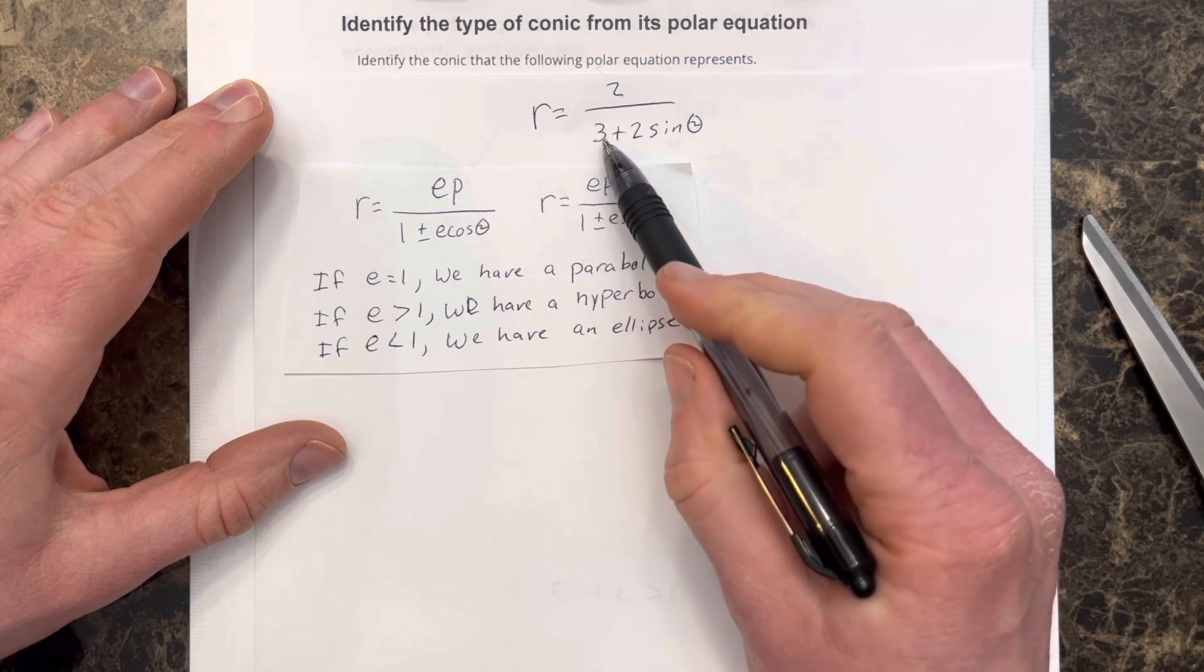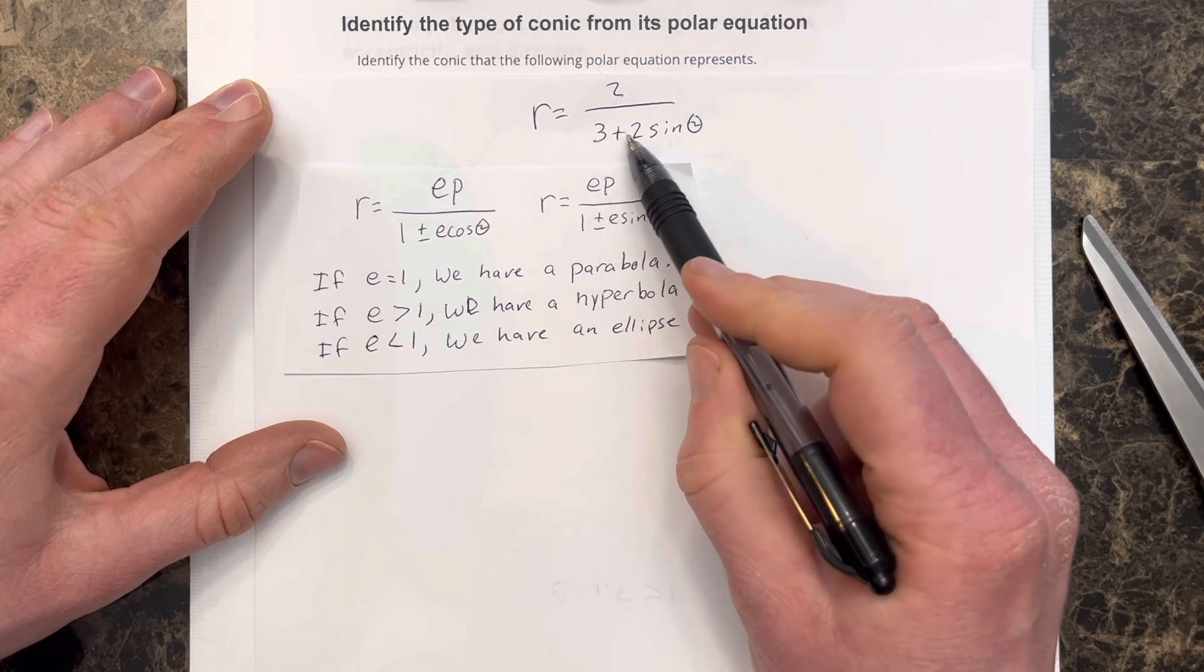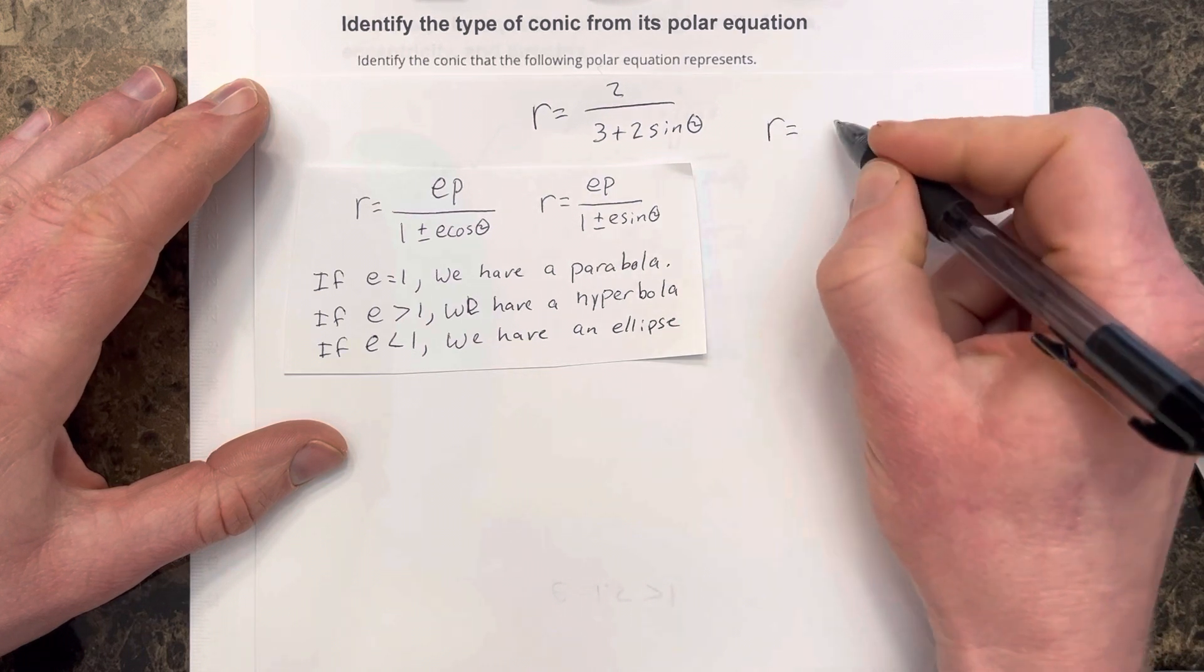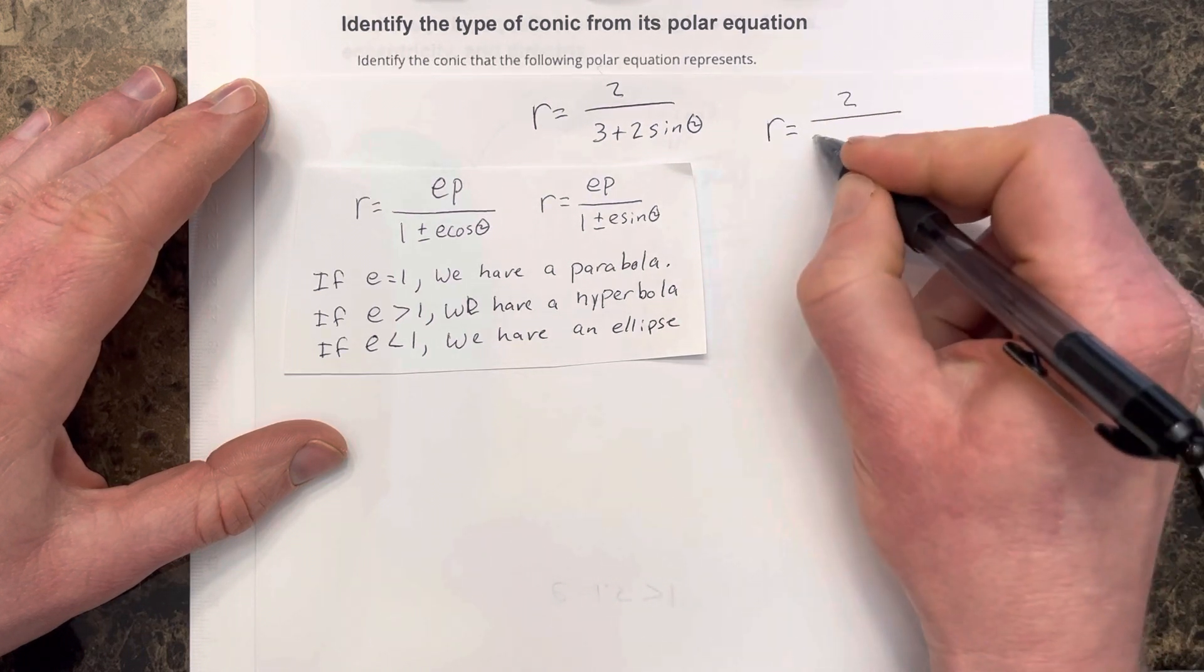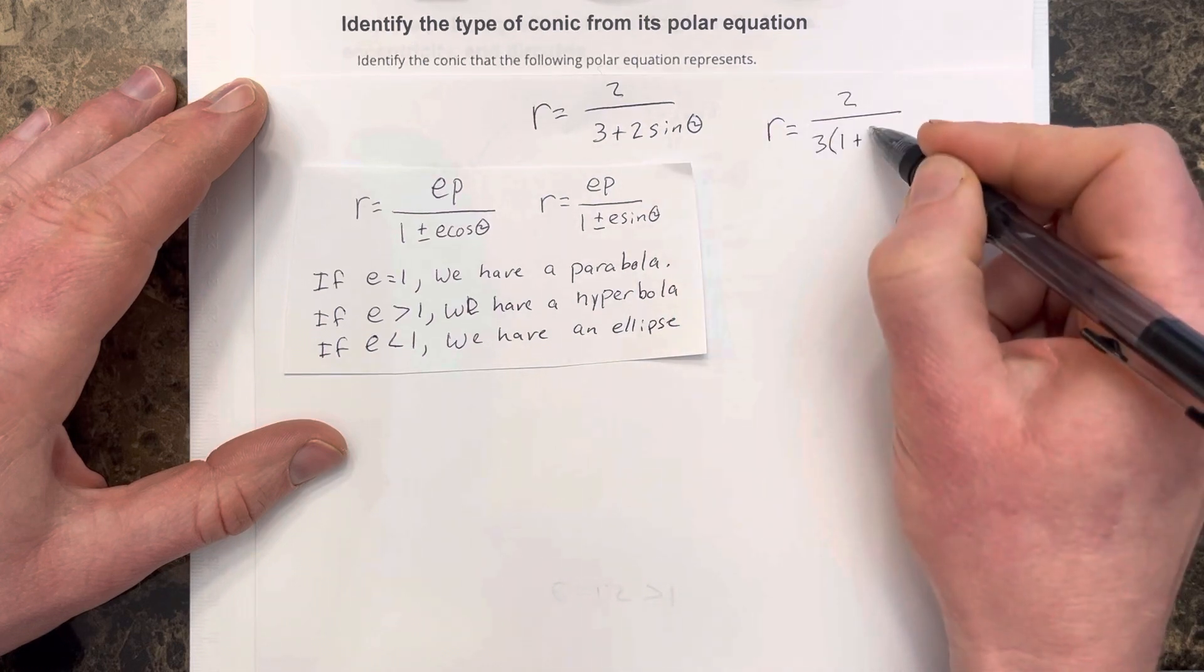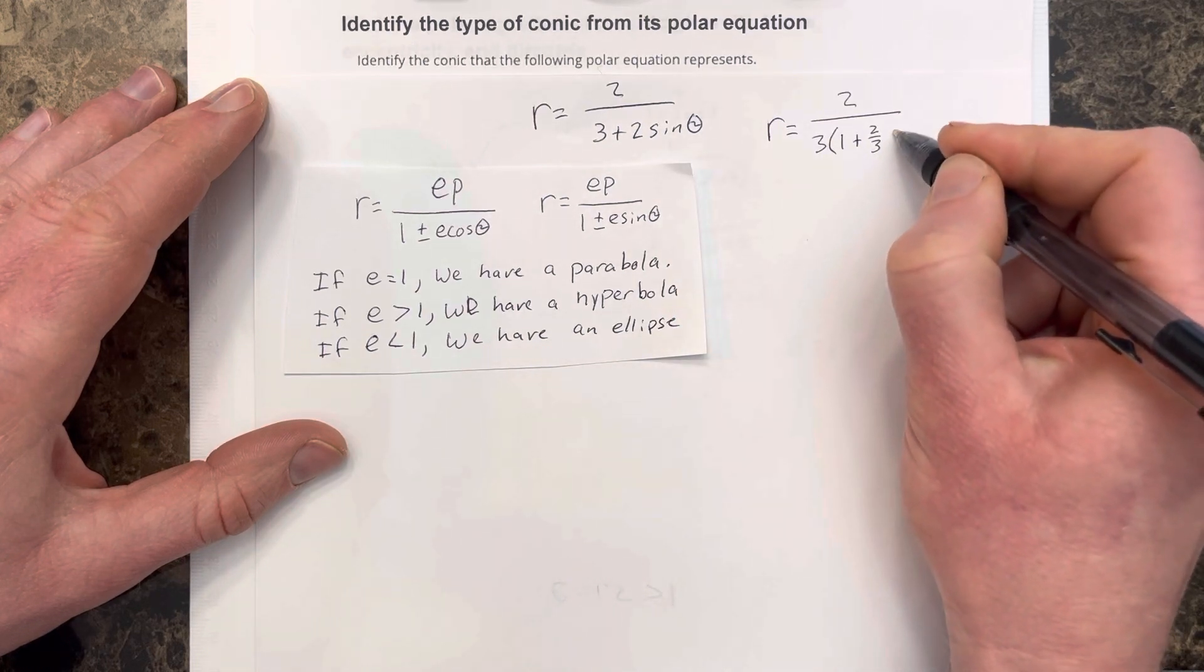To do this, we're going to need to get this number equal to 1. So we're going to factor a 3 out of both terms there. So r is equal to 2 over 3 parentheses 1 plus, if I factor 3 out of 2, that's 2 thirds sine theta.